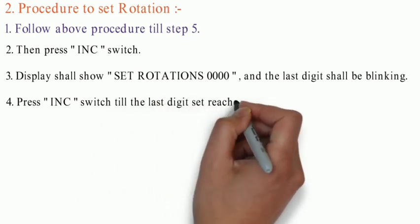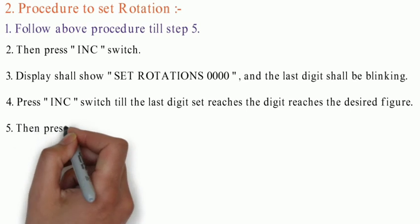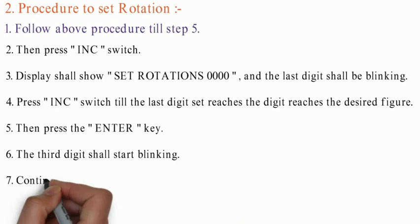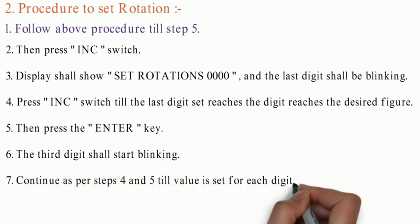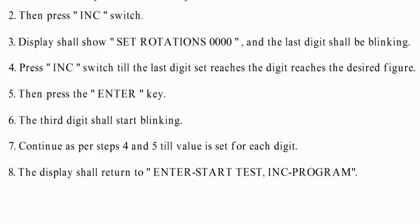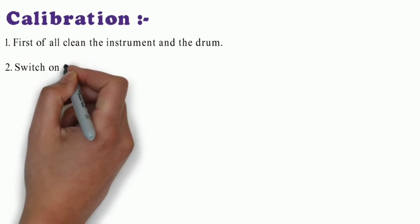Press INC switch till the last digit reaches the desired figure. Then press Enter key and the third digit shall start blinking. Continue as per step 4 and 5 till value is set for each digit. The display shall return to Enter Start Test. Then calibration: this is an important point. First of all, clean the instrument and the drum.